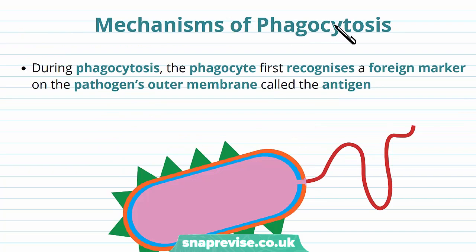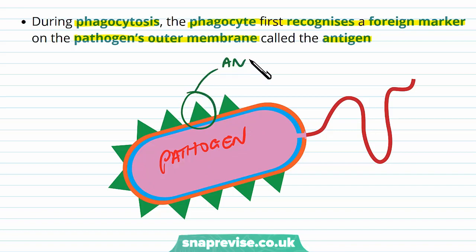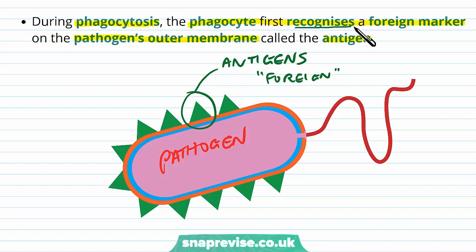During the process of phagocytosis, the phagocyte first recognizes a foreign marker on the pathogen's outer membrane, and we call this marker the antigen. Our own cells have antigens on them but the immune system recognizes them as self-antigens. On a pathogen like a bacterial cell, they have a cell membrane with particular proteins embedded in it — these are antigens and they're recognized as being non-self or foreign. So the phagocyte cells come across these antigens and recognize that they're not one of ours — they recognize it as a foreign marker.